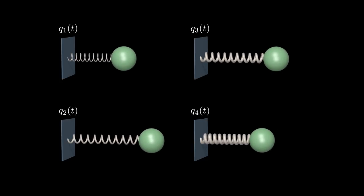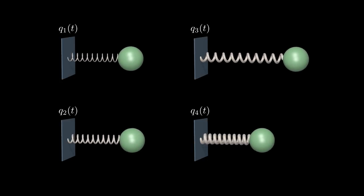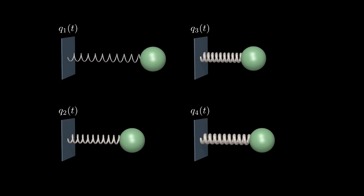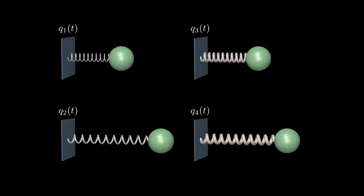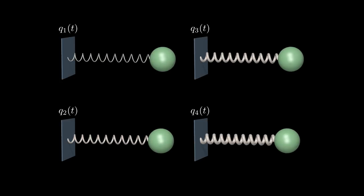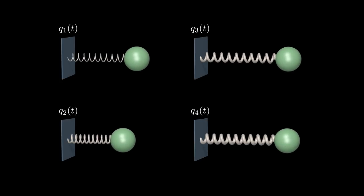Since we know how to treat a single harmonic oscillator quantum mechanically, this should allow us to treat any field quantum mechanically by simply combining the independent contributions of each member of this infinite set of harmonic oscillators.